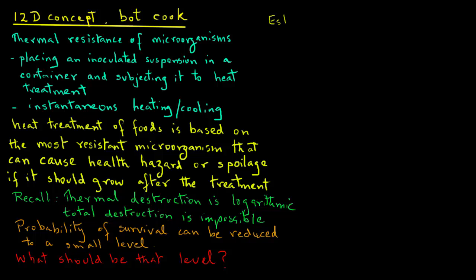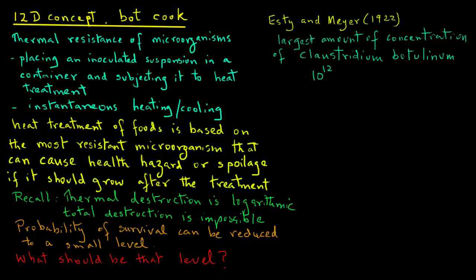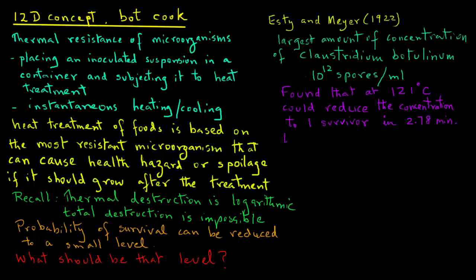Almost 100 years ago, Estee and Meyer performed experiments to determine thermal resistance of microorganisms. They placed the largest amount of the concentration they could get of Clostridium botulinum, and they were able to get 10 raised to power 12 spores of Clostridium botulinum per milliliter. And they found that at 121 degrees Celsius, which is same as 250 degrees Fahrenheit, they could reduce the concentration of the microbial spores of Clostridium botulinum to one survivor in 2.78 minutes of heating. In later experiments by Townsend in 1938, that time value was corrected to 2.45 minutes.